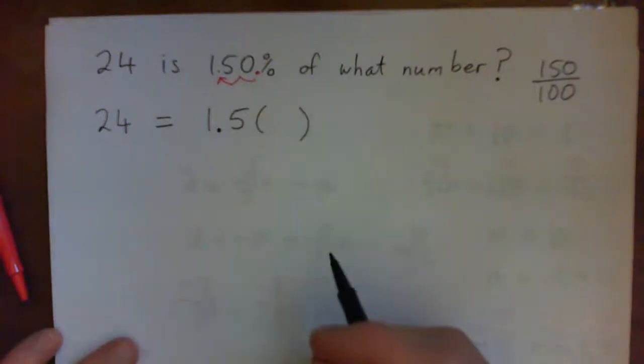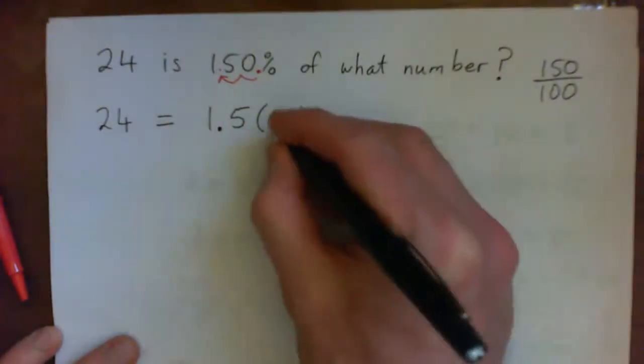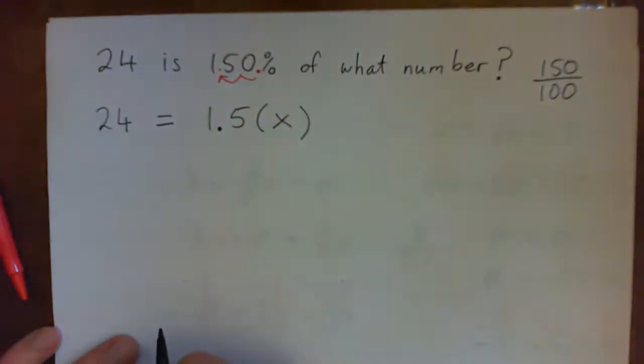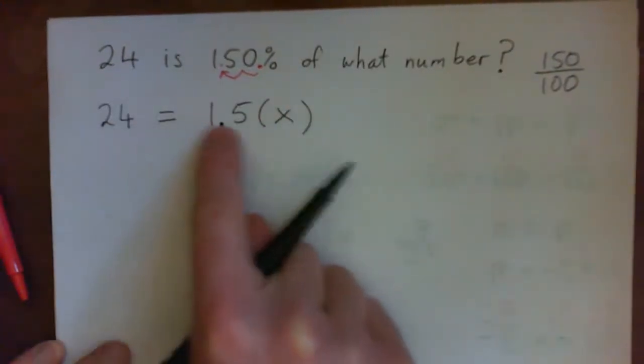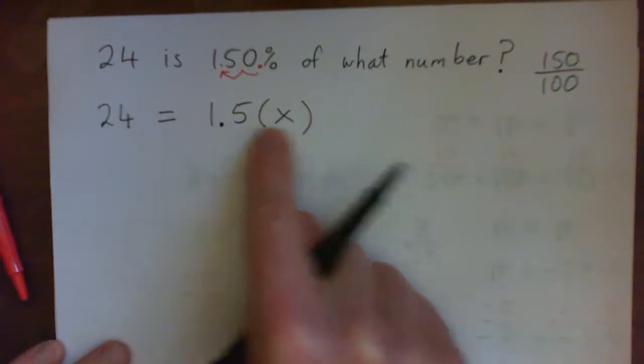A, B, C. Let's use X. So this sentence becomes the equation 24 equals 1.5 times X.